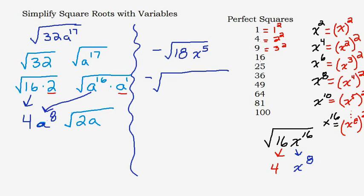Is 18 divisible by any perfect square? Yes — 9, because 9 times 2 is 18. You might wonder why not 6 times 3 — because 6 and 3 are not perfect squares. You must pick a perfect square so you can take the square root of it. If no perfect square divides into 18, you'd be done and can't simplify further. For x to the fifth, reduce the exponent by 1 to make it even, giving x to the fourth times x to the first.